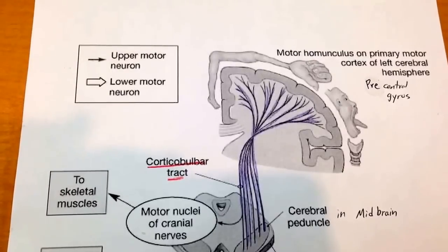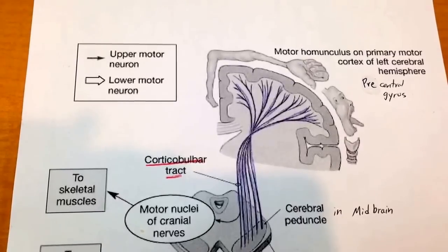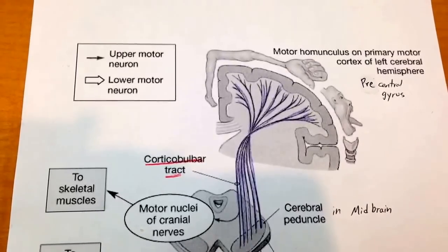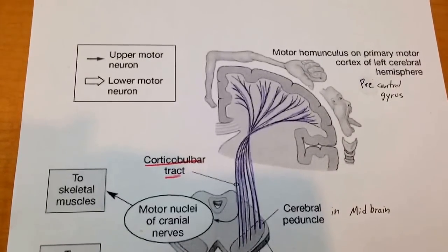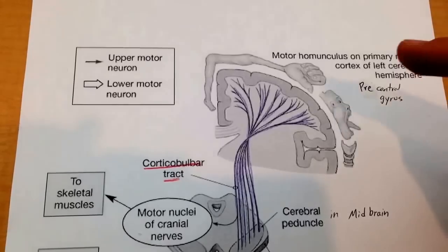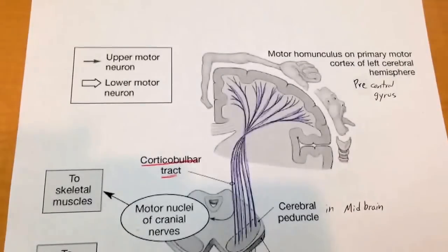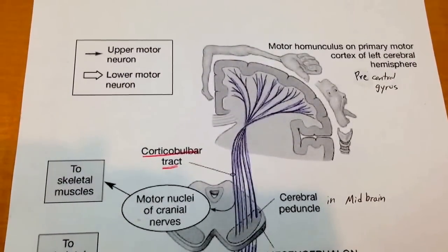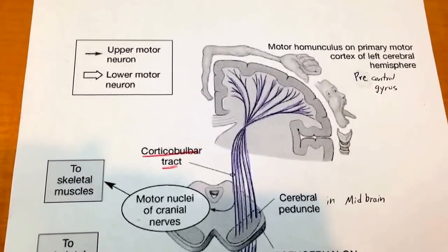Let's start with the first one, which is the corticospinal system, or tract, otherwise known as the pyramidal tract. One way you can remember this tract being the corticospinal is because it starts in the cortex and then moves to the spine. So if you completely forget on the test, just remember it starts in the cortex and moves to the spine.